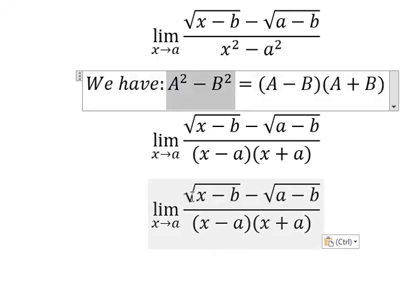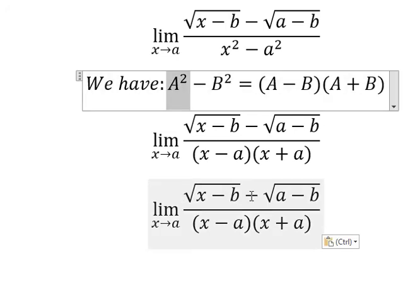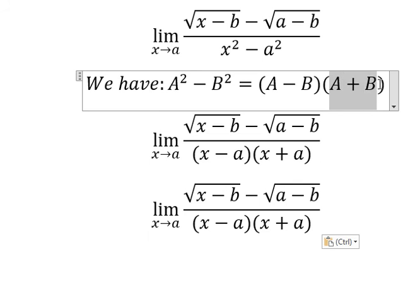Because I want to cancel the square root, we need to have the power two here, so we need to multiply by a plus b on numerator and denominator.